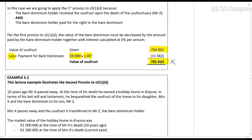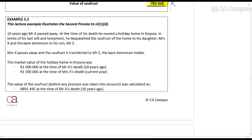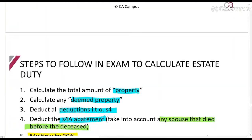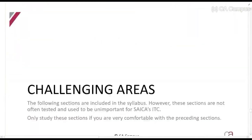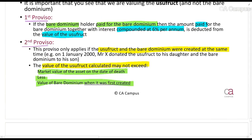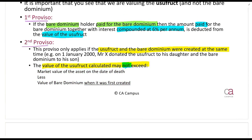Example 5.2 will show us the second proviso. The second proviso states that the value of the usufruct may not exceed the market value of the asset on the date of death, less the value of the bare dominium when it was first created.